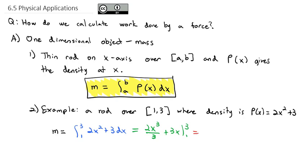Plugging in our limits of integration: 3³ is 27, 27 divided by 3 is 9, times 2 is 18 plus 3 times 3 is 9, minus plugging 1 in we get 2/3 minus 3. We get 70/3 for the total mass of this function.